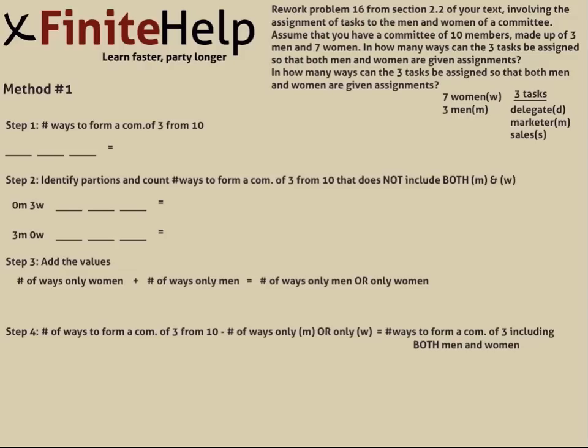There are two ways to go about solving this problem. I'm going to cover what I think is the best method first. In this method, we will first count the total number of ways to form a committee of 3 with special tasks from 10 people. Then we will do the exact opposite of what the problem asks. We'll find the number of ways to form a committee of only men or only women. After calculating that, we simply subtract that number from the total, and what you have left will be the number of ways to form a committee that does include both men and women.